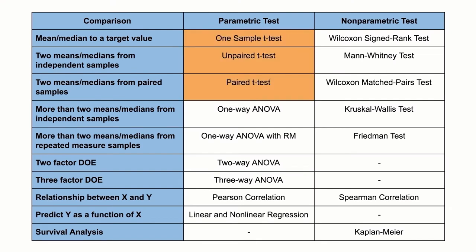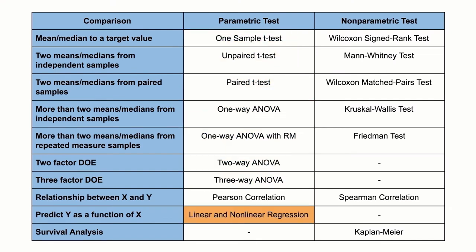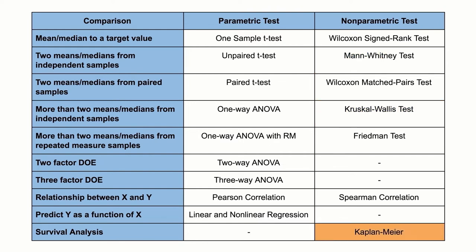Examples of parametric analyses in PRISM include t-tests, ANOVA, and regression, whereas examples of nonparametric analyses in PRISM include Wilcoxon, Mann-Whitney, and Kruskal-Wallis tests, as well as Kaplan-Meier survival analysis.